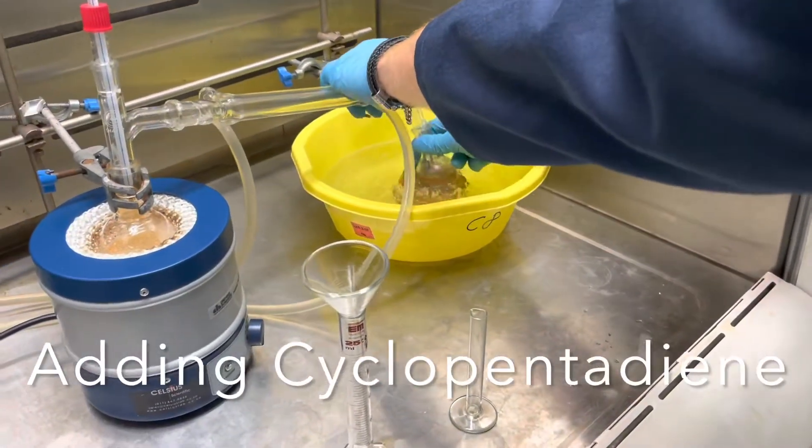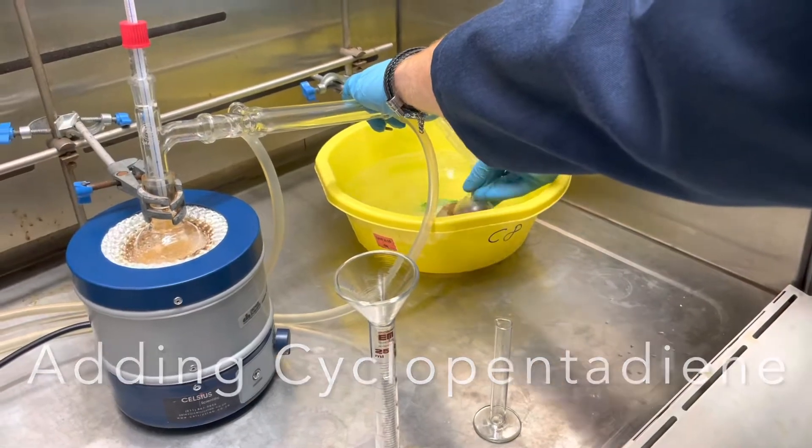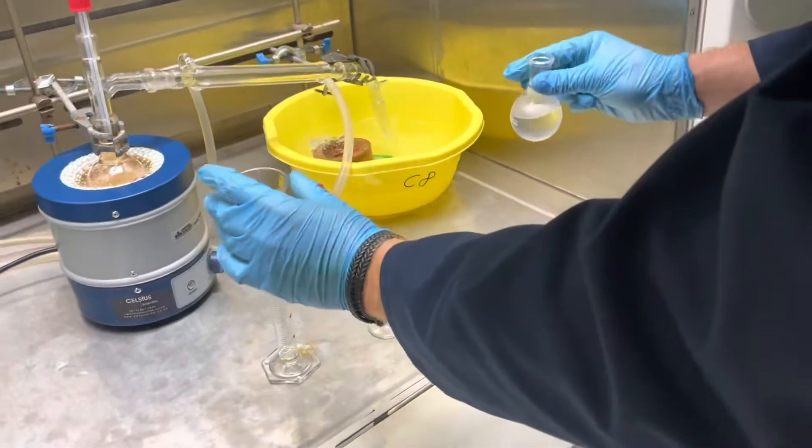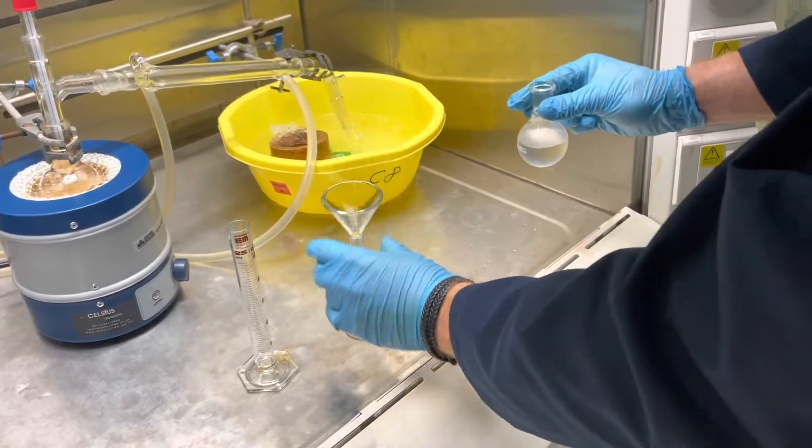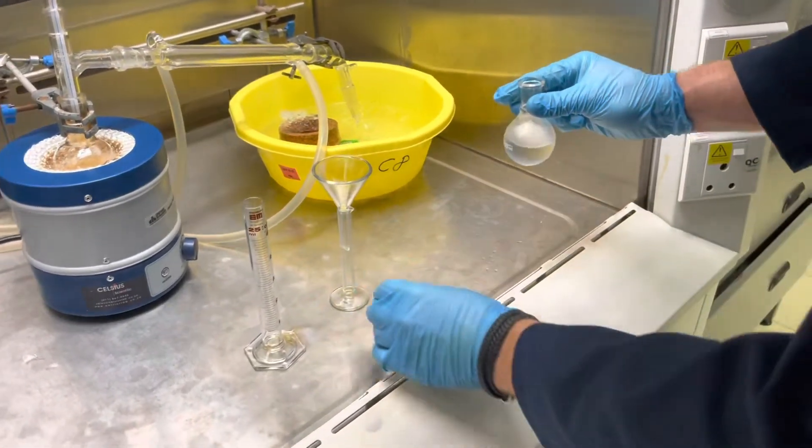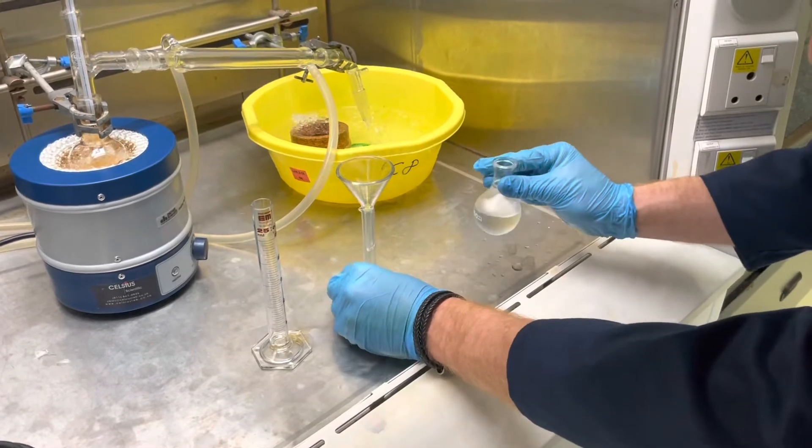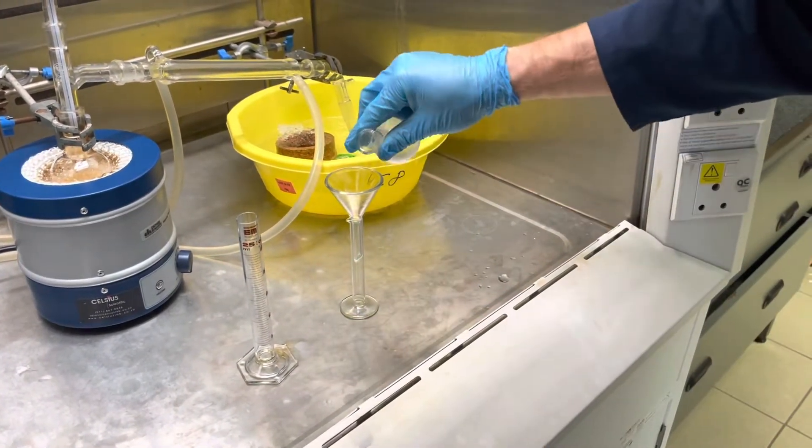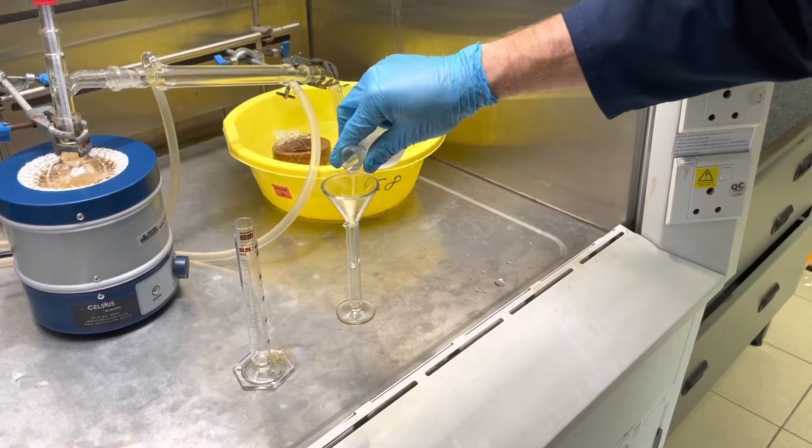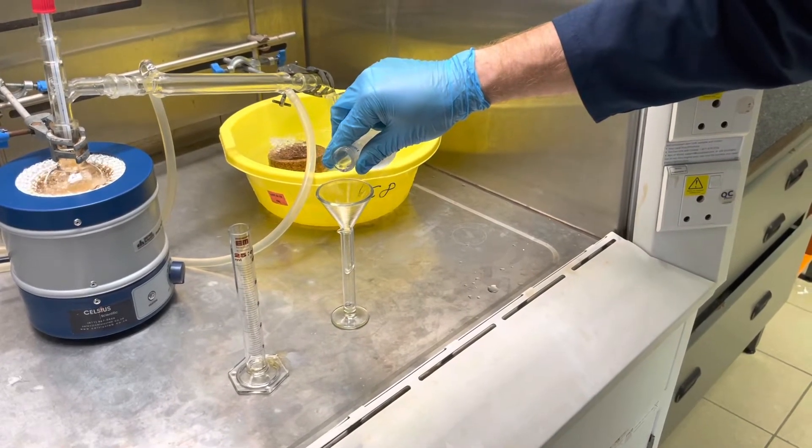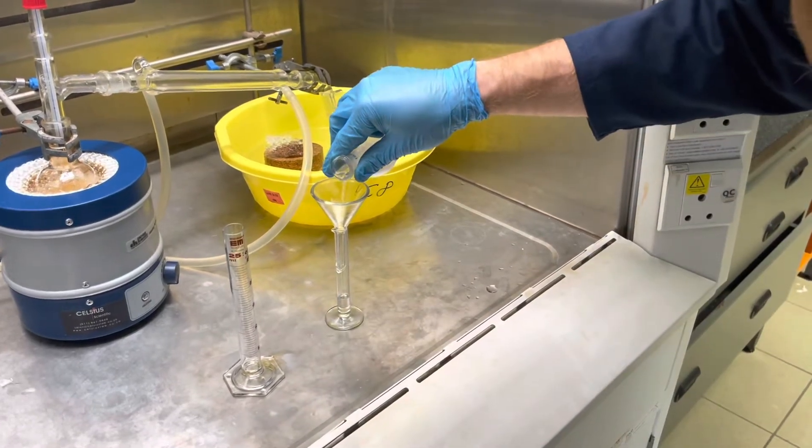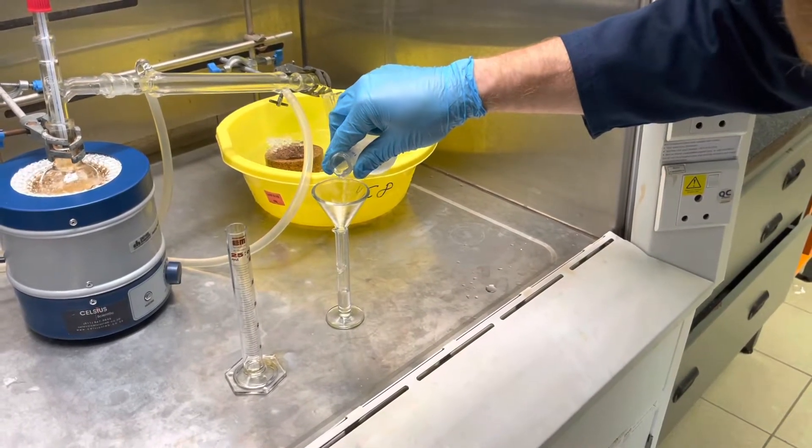Now we will collect our cyclopentadiene, our monomer, which has distilled for a few hours now. We will need to collect a certain amount, about 2.8 grams, which you need to convert to milliliters using a density calculation before coming to the lab on the day. This we have done now, so now we know what the correct volume is we require.